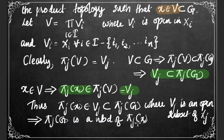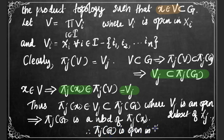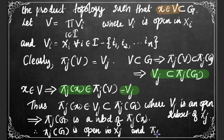Since πⱼ(x) is an arbitrary element of πⱼ(G), we can conclude that πⱼ(G) is a neighborhood of each of its points, and therefore πⱼ(G) is open in Xⱼ. Hence πⱼ is an open function. Since j ∈ I is arbitrary, we can conclude that all projection functions are open. This completes our proof.